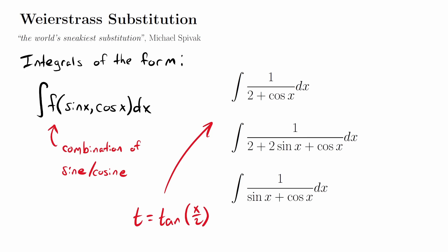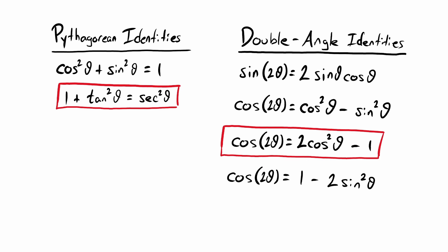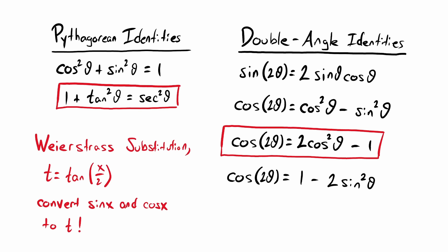You're probably already familiar with these basic identities: the Pythagorean identities and the double angle identities. We're going to use these to take our Weierstrass substitution — t equals tangent of x over 2 — and use these identities to convert sine of x and cosine of x to t. Let's go ahead and see how we use that Weierstrass substitution and do the conversions of sine of x and cosine of x to t.